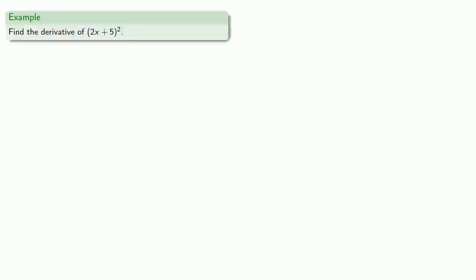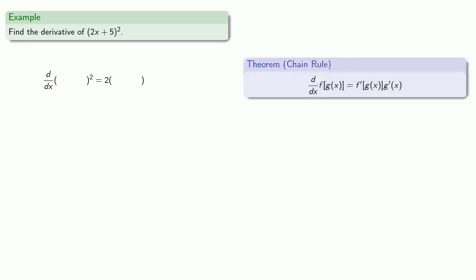And so we can find the derivative of 2x plus 5 squared. Well that's going to be the derivative of something squared. The derivative of something squared is 2 something to the first power. And our chain rule says that we also multiply by the derivative of our something.